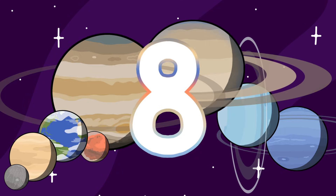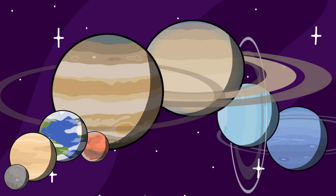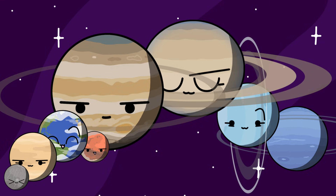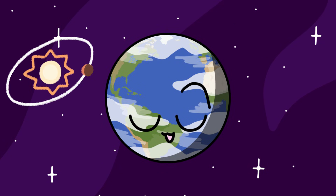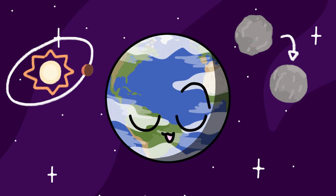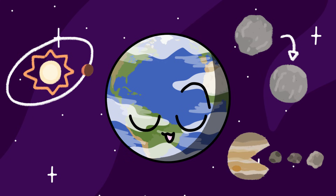There are 8 planets in our solar system, which are Mercury, Venus, Earth, Mars, Jupiter, Saturn, Uranus, and Neptune. Planets are celestial objects that orbit a star, have enough gravity to become a ball, and have cleared their orbits from other smaller objects like asteroids.